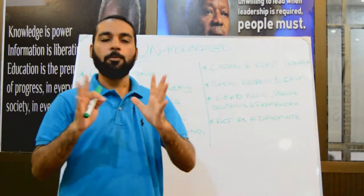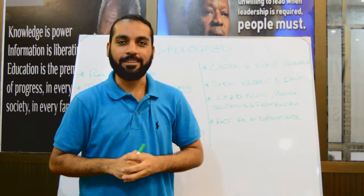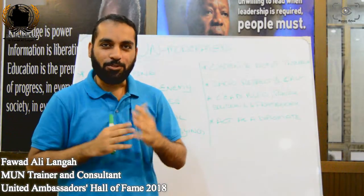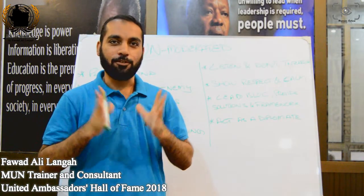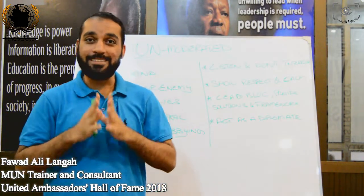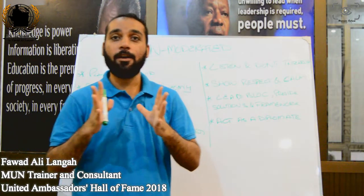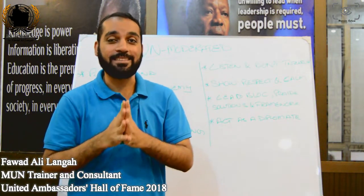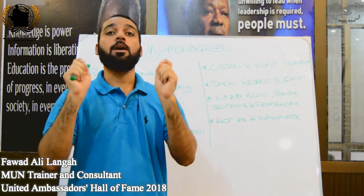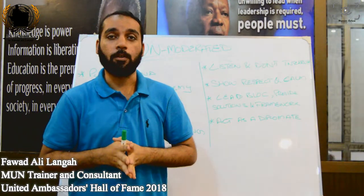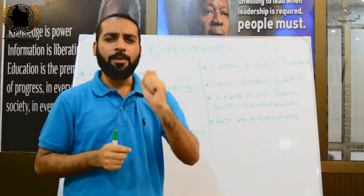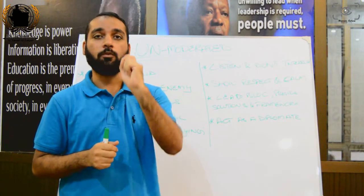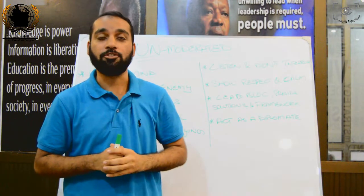Today we are going to talk about negotiations, lobbying, diplomatic skills, allies, enemies — unmoderated caucus. This is a very important step and aspect of Model United Nations.